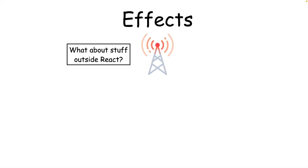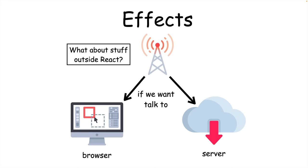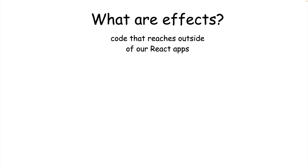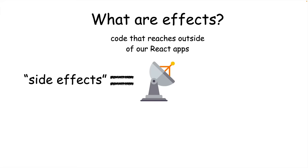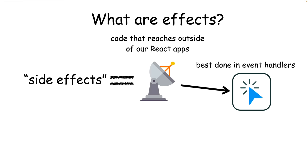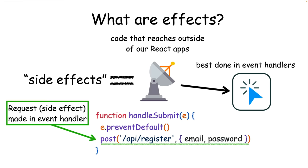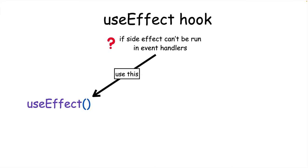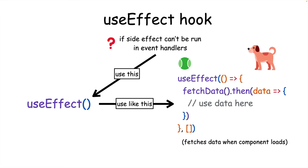But what if we need to do something outside our React app? Your app might need to talk with the browser API or make a request to a server. Effects are code that reach outside of our React application. Usually effects, also known as side effects, can be done within event handlers — for example, to make an HTTP request when you submit a form or click on a button. If you can't run your effects within an event handler, then you can run them using the useEffect hook. A common pattern is to fetch data when components first load with the useEffect hook.